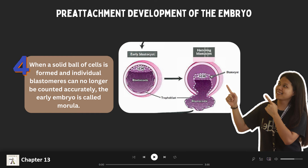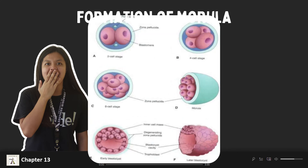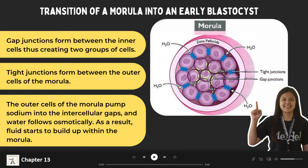Cells of the morula continue to divide and the blastocyst develops. As you can see, it consists of an inner cell mass, a cavity called the blastocele, and a single layer of cells called the trophoblast. This picture shows the formation of the morula, beginning from the two-celled embryo up to the formation of the blastocyst.